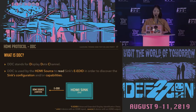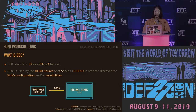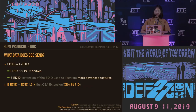The second protocol is DDC, which stands for Display Data Channel. It is used by the HDMI source to read the sink's EDID in order to discover the sink's configuration and capabilities. More easily illustrated: when you connect a TV and a laptop with HDMI, the sink (TV) sends the EDID data to the source (laptop).